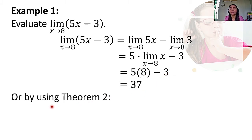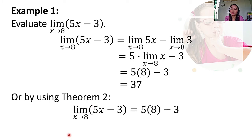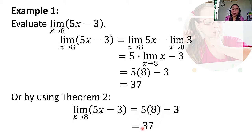We can also evaluate the limit using theorem number 2 — direct substitution. The limit of 5X minus 3 as X approaches 8: substitute 8 for X, giving 5 times 8 minus 3, which is also equal to 37.